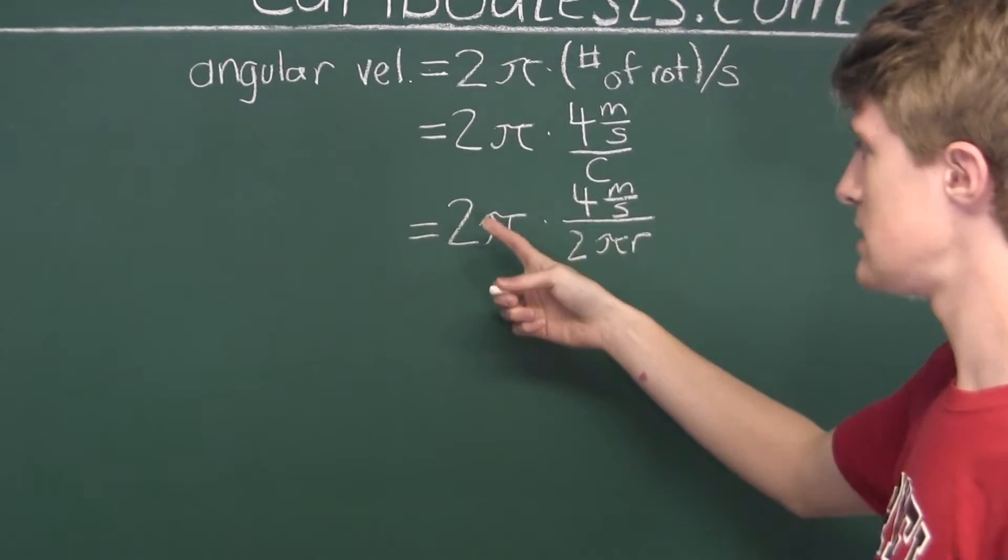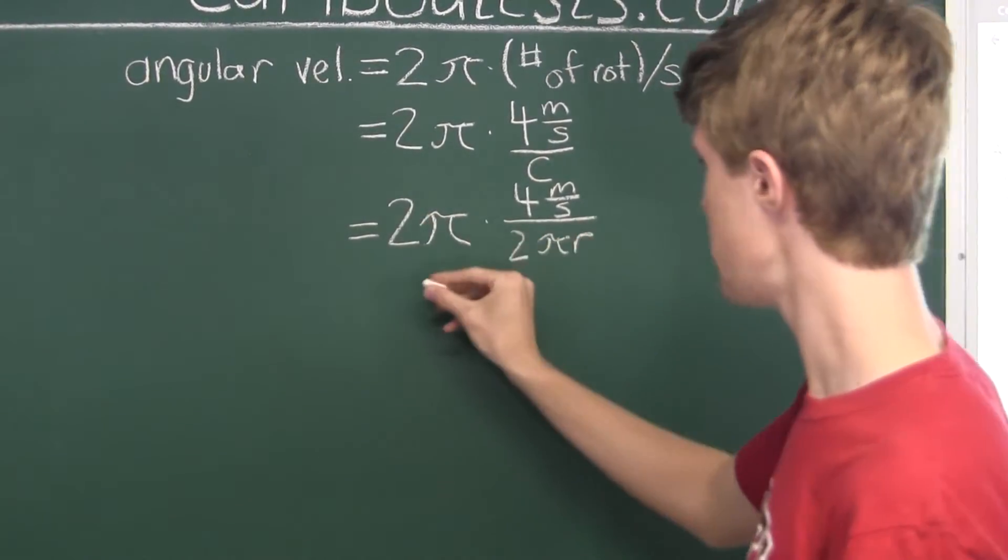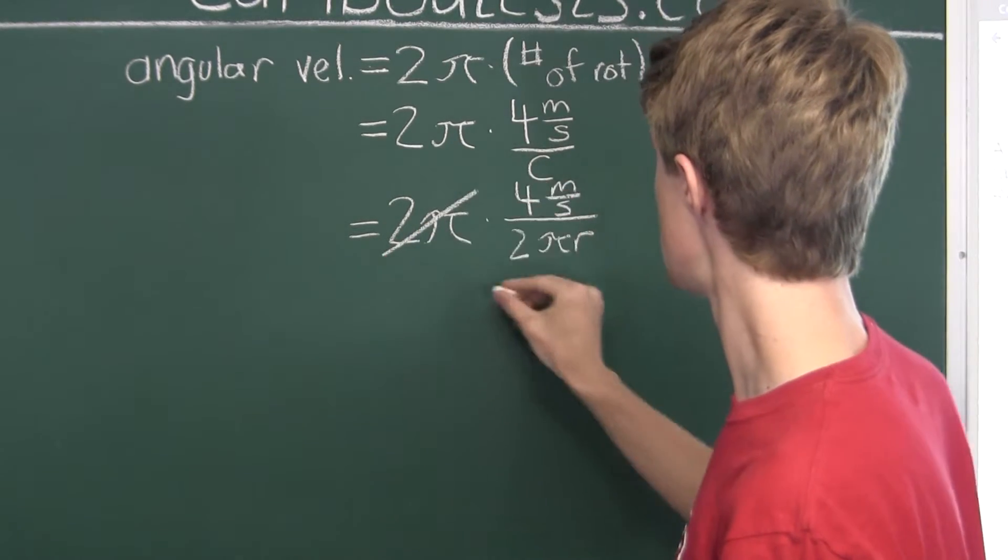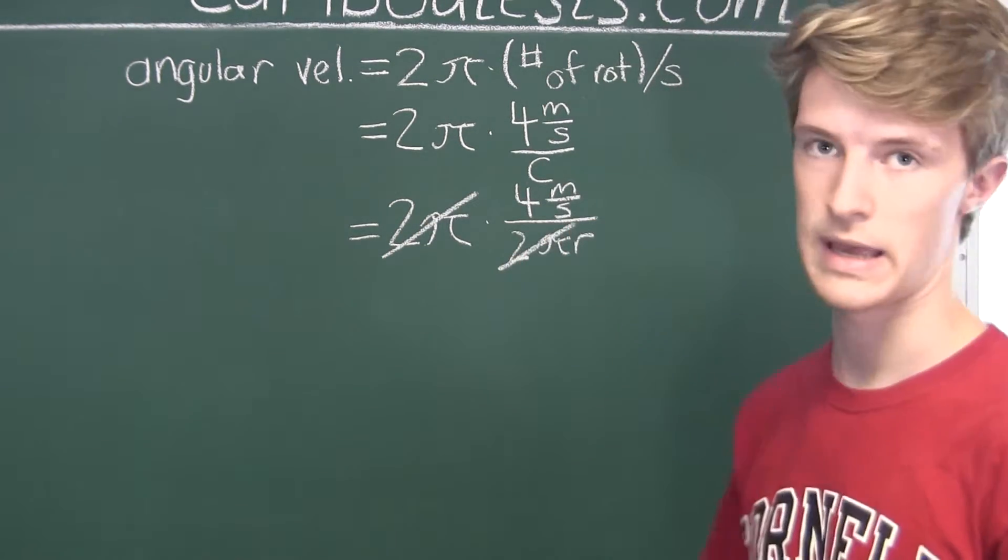And as we can see here, we have 2π in the numerator and the denominator. So, those will just cancel out.